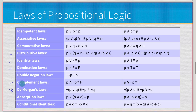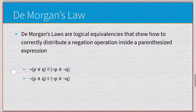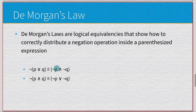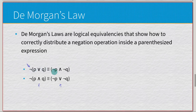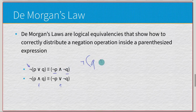We've already seen the conditional identity applied. DeMorgan's laws are logical equivalencies that show how to correctly distribute a negation operation inside a parenthesized expression. Negated P disjoined with Q is logically equivalent to negated P conjoined with negated Q. And similarly, negated P conjoined with Q is equivalent to negated P disjoined with negated Q.